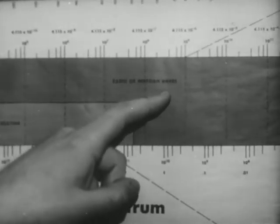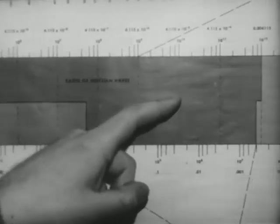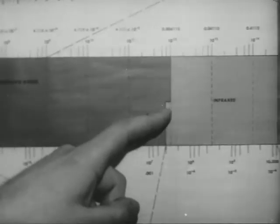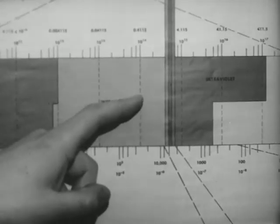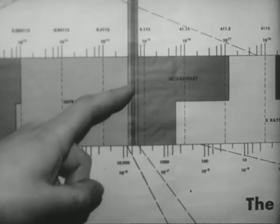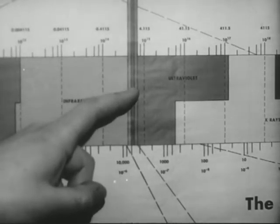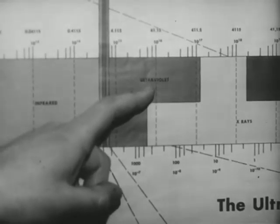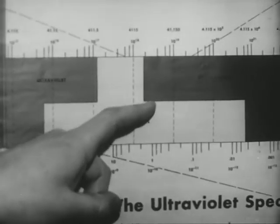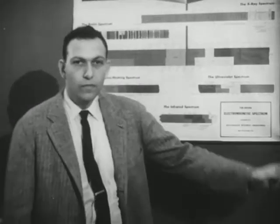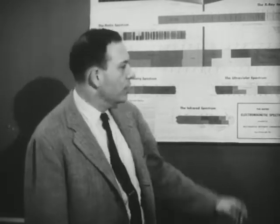Radio waves, about a meter. Microwaves, a hundredth of a meter. Infrared, about 10 to the minus 5 meters. Visible light, 5 times 10 to the minus 7 meters. Ultraviolet, about 5 times 10 to the minus 8 meters. X-rays, 10 to the minus 10 meters. You have just seen the enormous range in frequency and wavelength over what we call the electromagnetic spectrum.